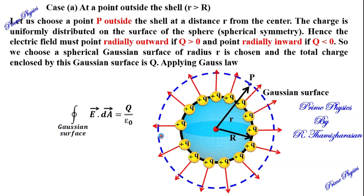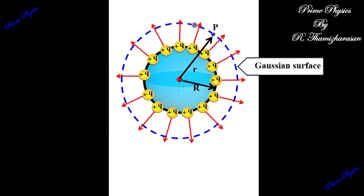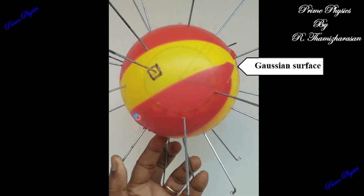In three dimensions, consider the spherical Gaussian surface. The electric field is radially outward for positive charge, and radially inward for negative charge. The Gaussian surface is an imaginary sphere, while the charged sphere is the actual charged surface — the two spheres are considered separately.